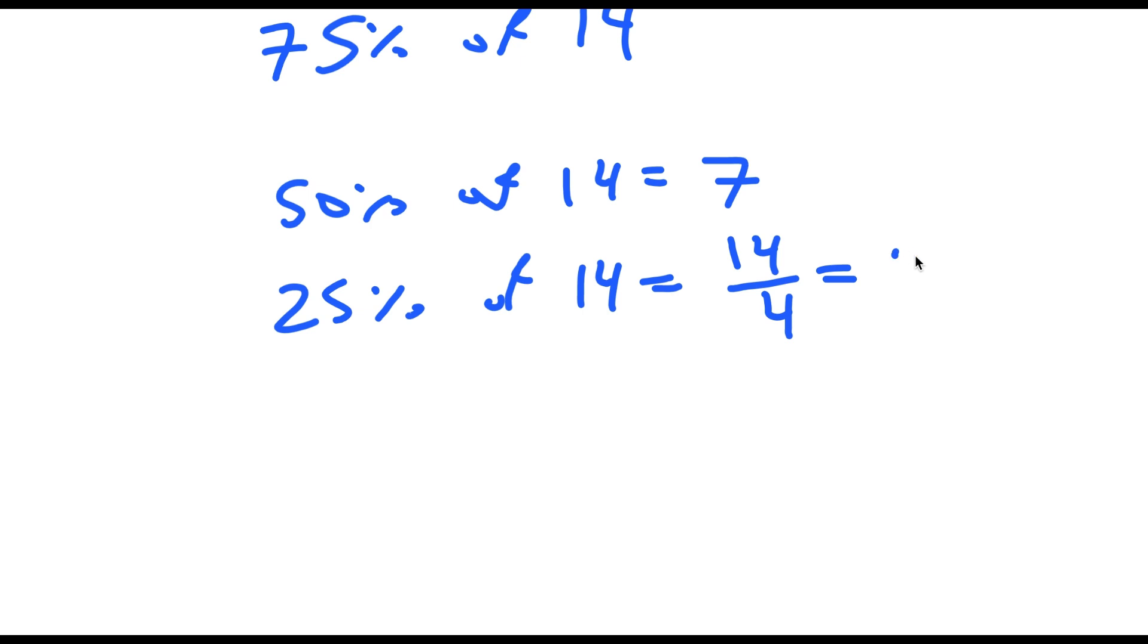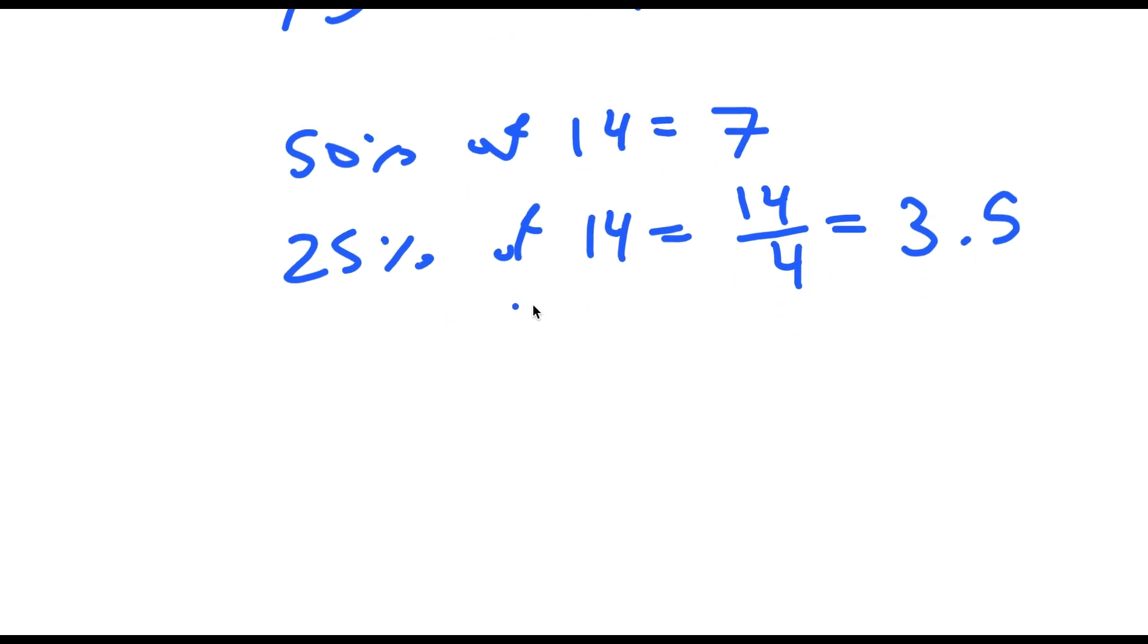So 14 divided by 4 is actually 3.5. So now, if I add these two, 7 plus 3.5, that's 10.5. So it's still really simple.